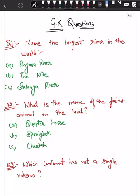You have to tell the world's longest river. Your options are Angara River, Danube, or Salangana River. Option number B is the correct answer, that is the Danube.